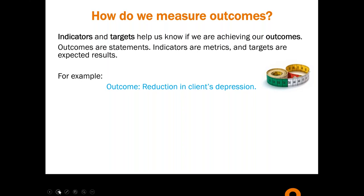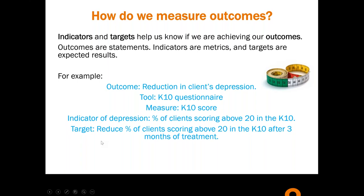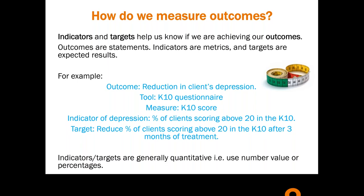Here's an example. I was recently working on a drug and alcohol project and the outcome was a reduction in the client's depression. The tool being used was the K10 — the Kessler 10 questionnaire to measure depression. The measure was the score, and the indicator of depression was people scoring above 20 — the standard set by the creators of the tool. The target was to reduce the percentage of clients scoring above 20 after three months. You can see that target is quite SMART: specific, measurable, achievable, realistic, and time-bound.